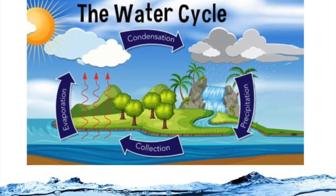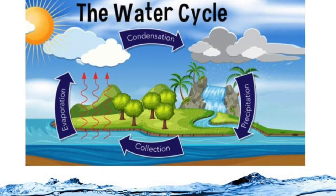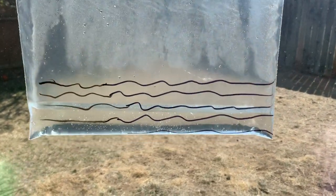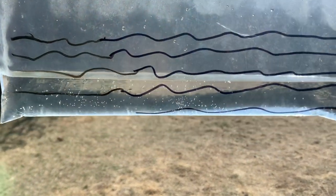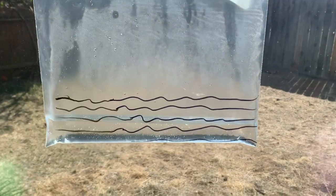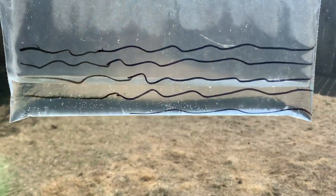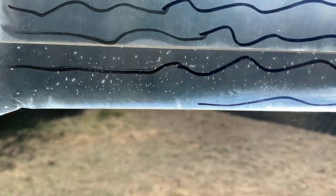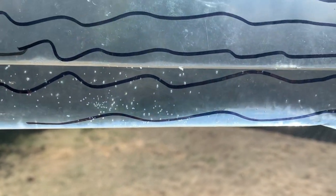For our water cycle bag experiment, we are going to start by looking at the river. The river has the presence of water bubbles due to the heat generated by the rays of the sun into the water bag. In other words, the temperature inside the bag is changing to a high temperature. This part of the cycle is known as evaporation.